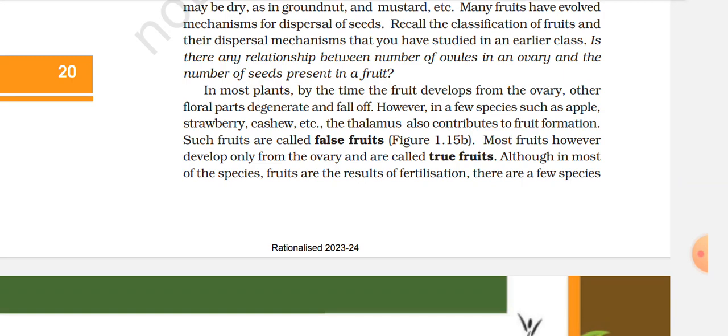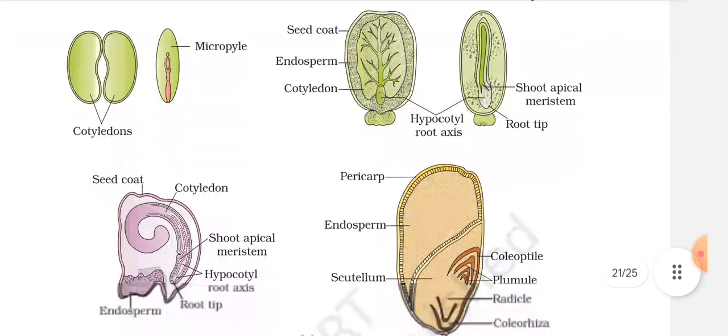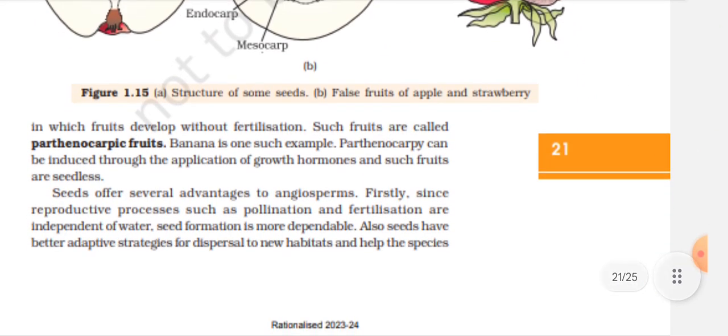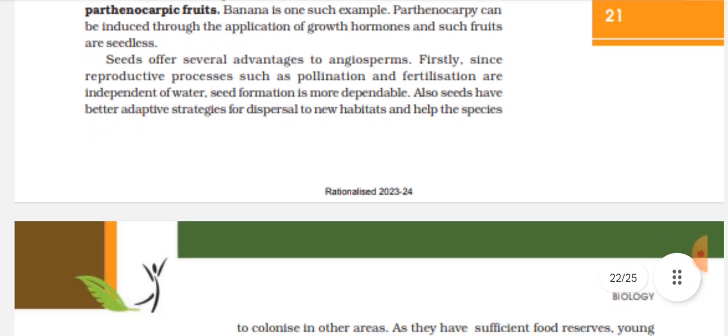Most fruits, however, develop only from the ovary and are called true fruits. Although in most species fruits are the result of fertilization, there are a few species in which fruit develops without fertilization — such fruits are called parthenocarpic fruits. Banana is one such example. Parthenocarpy can be induced through the application of growth hormones, and such fruits are seedless.